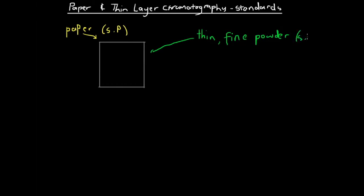This thin, fine powder is the stationary phase in TLC, and it will often be something like alumina — aluminium oxide. So in paper chromatography the paper is the stationary phase, while in thin layer chromatography a thin, fine powder coating on one side of the cardboard is the stationary phase.